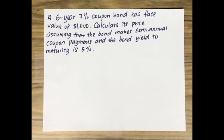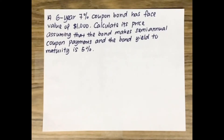Hello everyone. In this video I'm going to show you how to calculate the present value of a bond when a bond pays semi-annual coupon. Here's the question: a 6-year, 7% coupon bond has a face value of $1,000. Calculate its price assuming that the bond makes semi-annual coupon payments and the yield to maturity is 5%.